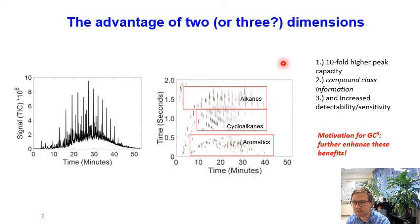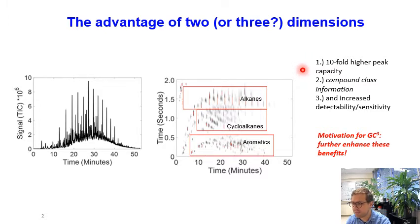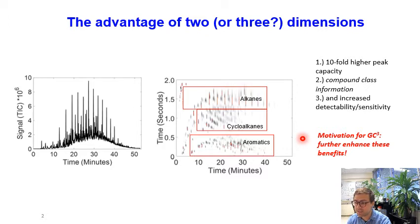Of course, everyone here is familiar with the advantages of GC×GC, which I think can be distilled down into three distinct categories. GC×GC provides roughly tenfold higher peak capacity, increased compound class information, and increased detectability, all relative to 1D GC. Our motivations for exploring GC Cubed are simply to see if we can further enhance these three key benefits, especially to see if we can further enhance the peak capacity.